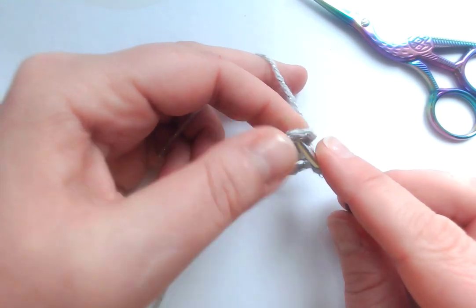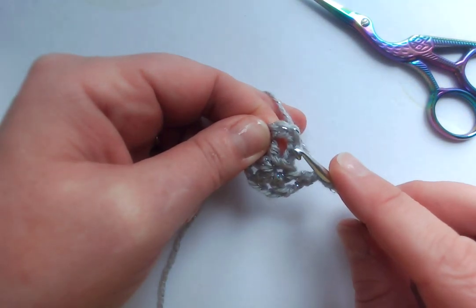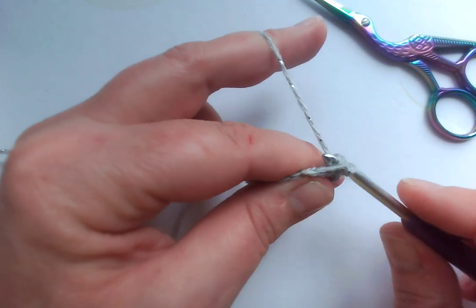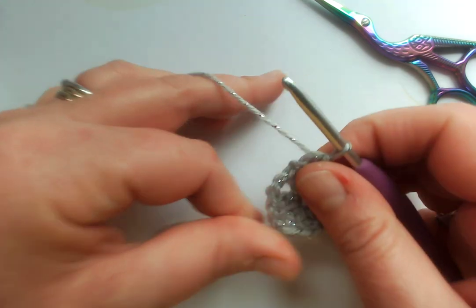So now you're going to slip stitch in the third one up. One, two, three, push your hook through there, grab the yarn and put it through everything.